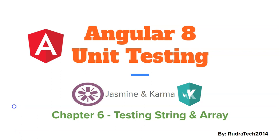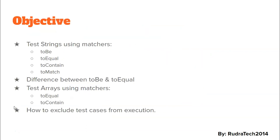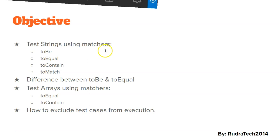Welcome to Rudra Tech tutorial. In chapter 6 of Angular 8 unit testing with Jasmine and Karma, we are going to look at testing strings and arrays. The objectives of this video are to test strings using matchers: toBe, toEqual, toContain, and toMatch; see the difference between toBe and toEqual; test arrays using toEqual and toContain; and how to exclude test cases from execution.